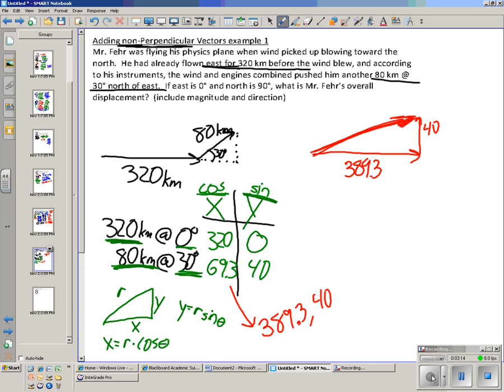So I've got to get the magnitude by using good old Pythagorean theorem, x squared plus y squared equals r squared. It turns out that tapping into my calculator I get the r is equal to 391.3 kilometers.